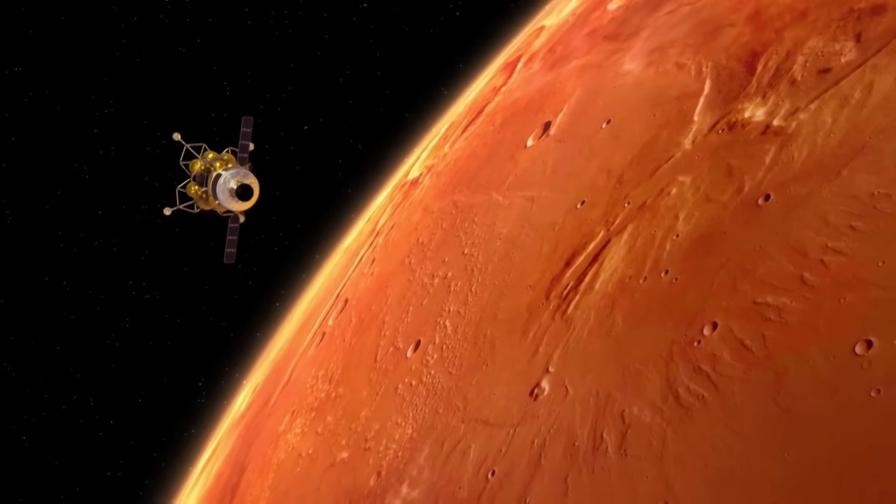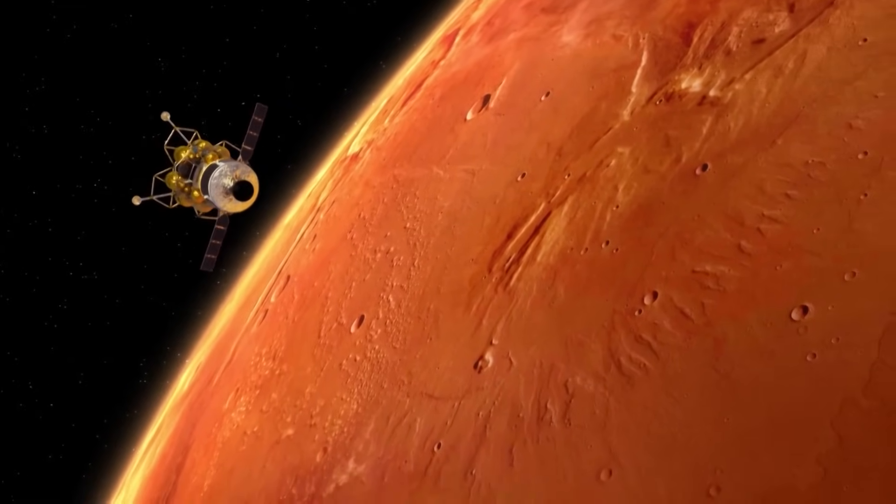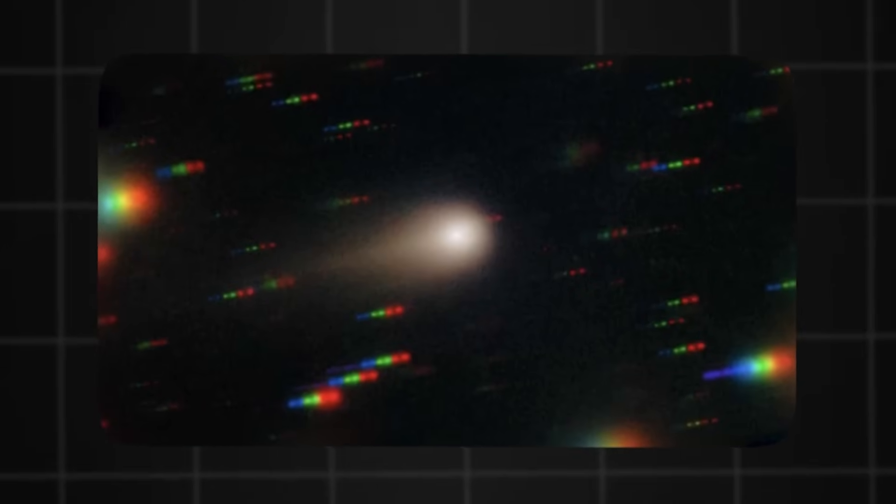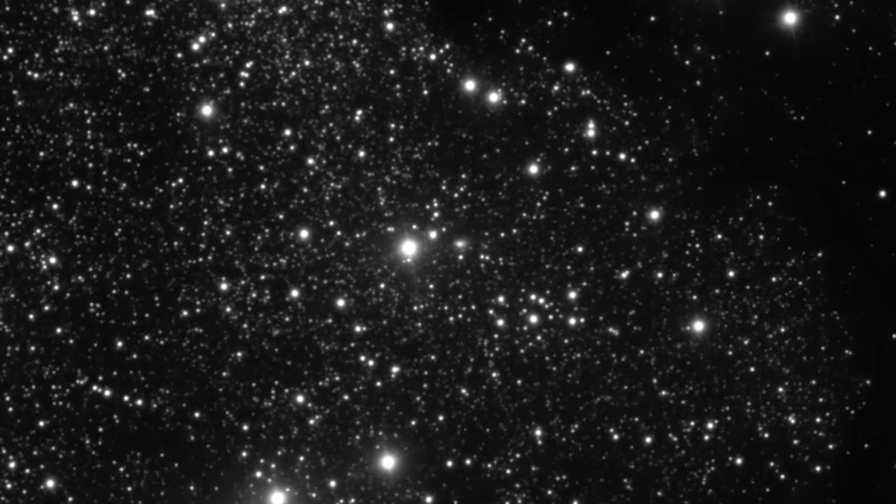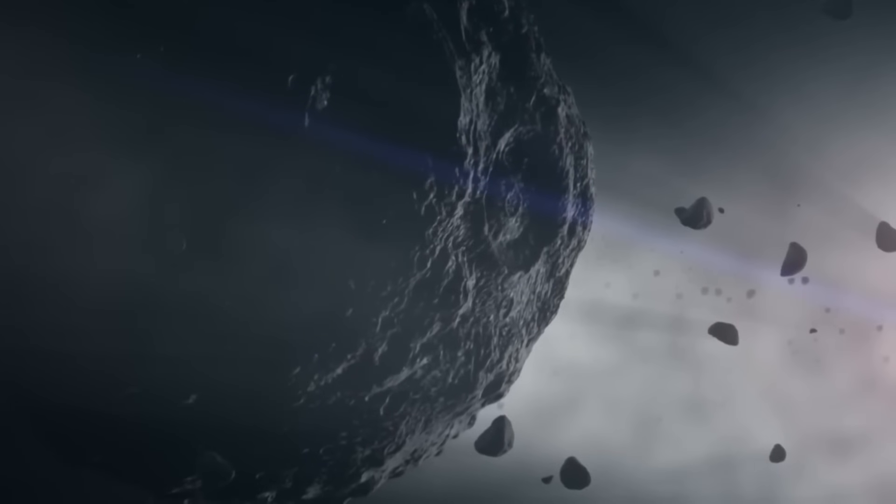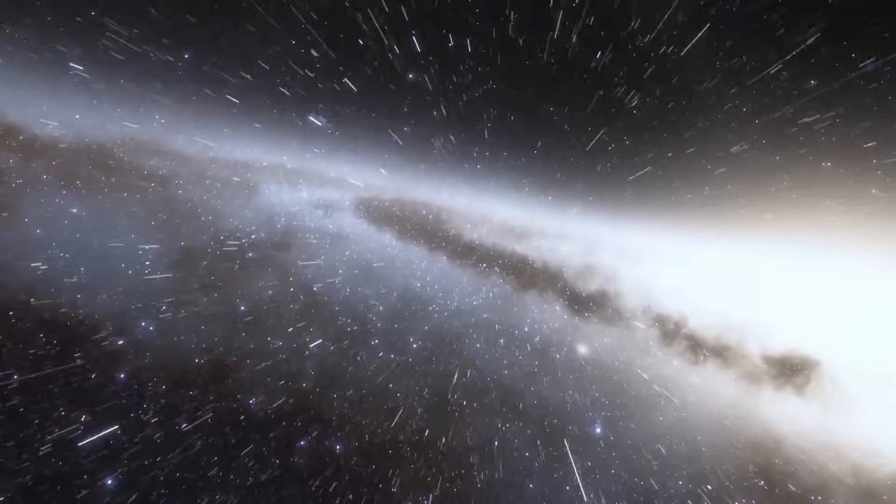To understand the urgency of Webb's findings, we first need to know what 3I-ATLAS is. Unlike ordinary comets born from the Oort Cloud or Kuiper Belt, 3I-ATLAS is interstellar. That means it didn't form here. It comes from another star system entirely.